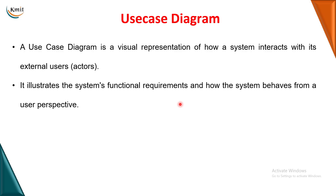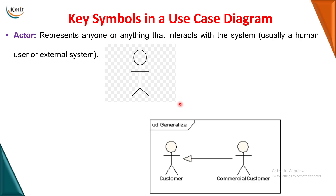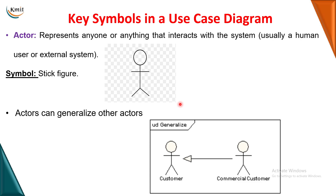Now let us see what are the various symbols we have in this use case diagram. The first symbol is the actor. An actor is a person or a system who will be interacting with the software. The symbol for actor is a stick figure, as you can see here.